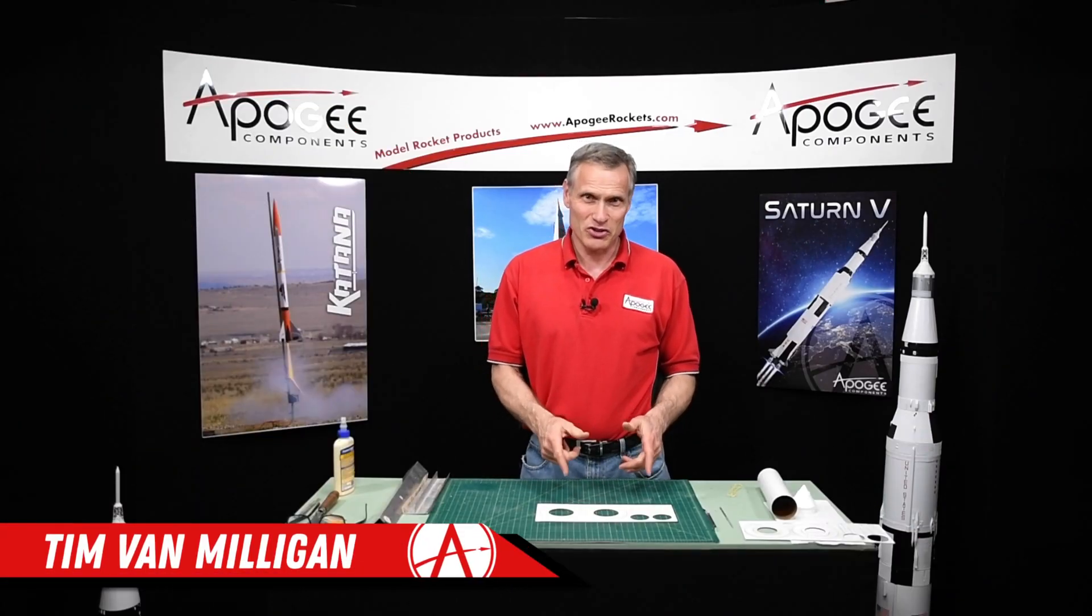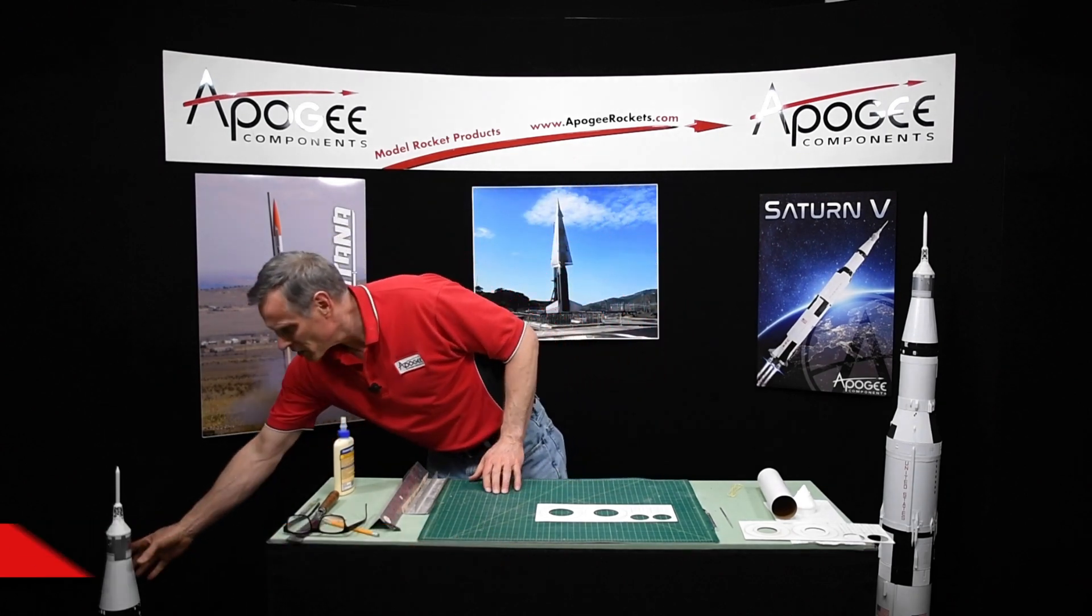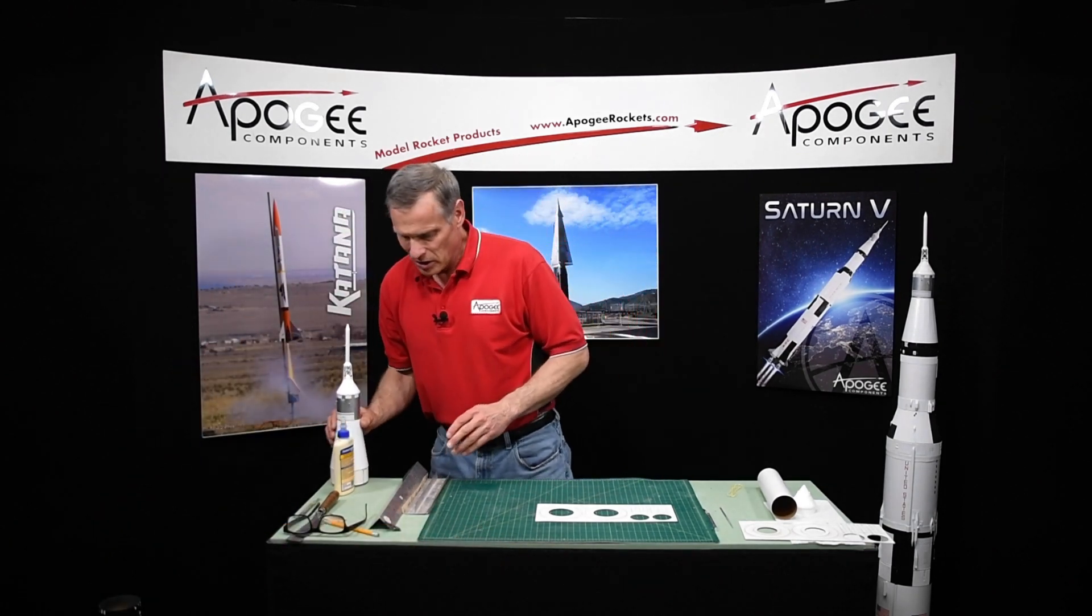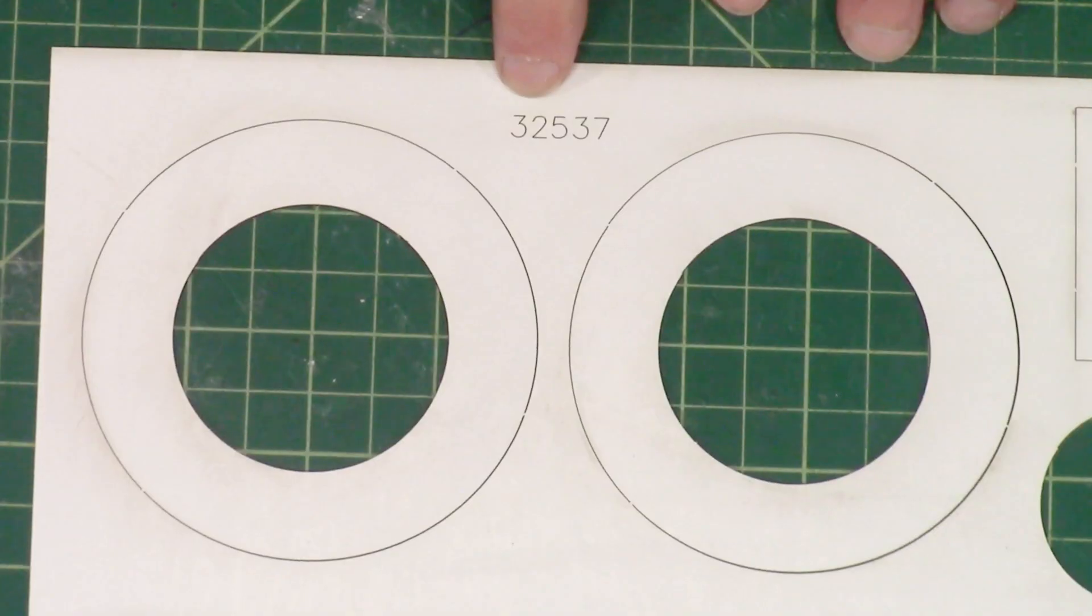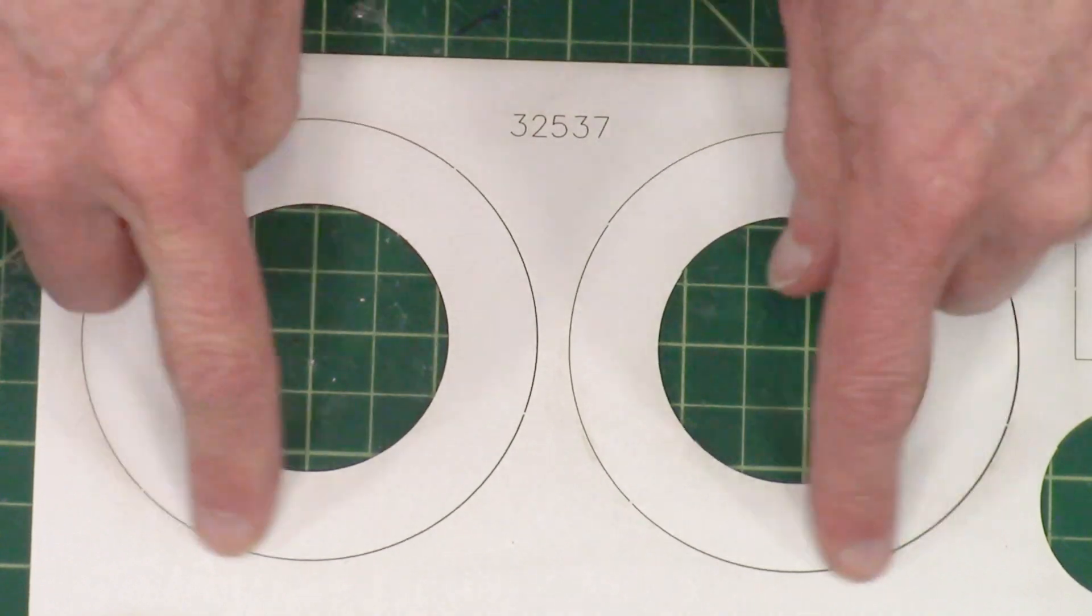This is the start of the construction of the upper part of the rocket, which is this part right here. We're going to start by locating the rings and they're in part number 32537. There's two rings.